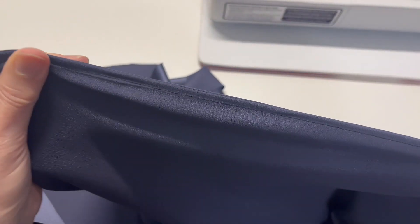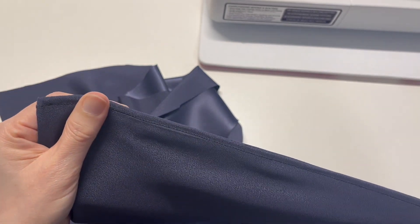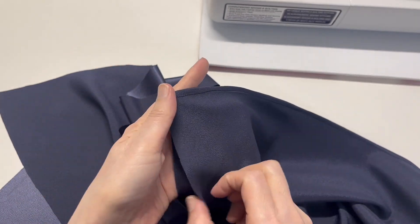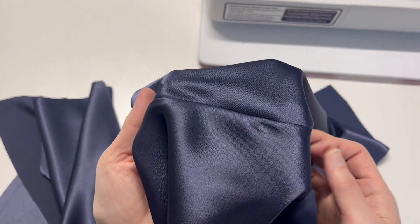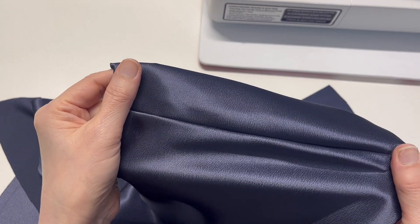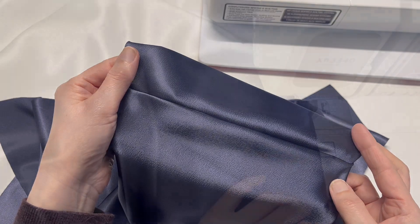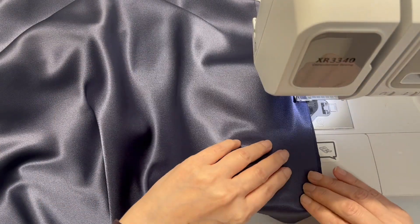This is what the inside of the skirt looks like. It's a neat finish with no visible seam. Sew the other side in the same way.